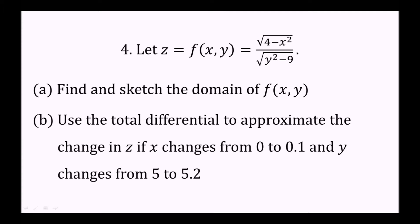Let c equal the function of x and y, which is equal to the square root of the quantity 4 minus x squared, divided by the square root of the quantity y squared minus 9. In part a, we want to find and sketch the domain of f(x, y), and then we want to use the total differential to approximate the change in z if x changes from 0 to 0.1 and y changes from 5 to 5.2.